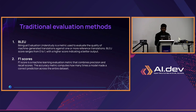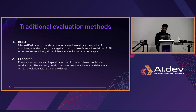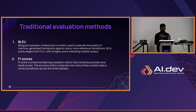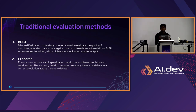I'll quickly go through traditional evaluation methods. First is BLEU — Bilingual Evaluation Understudy — a metric used to evaluate the quality of machine-generated translation against one or more references. The higher the score, the better the quality of the output. Then there is the F1 score, where you run the same prompt multiple times and evaluate based on precision — how many times your model answered correctly — and calculate an F1 score from that.